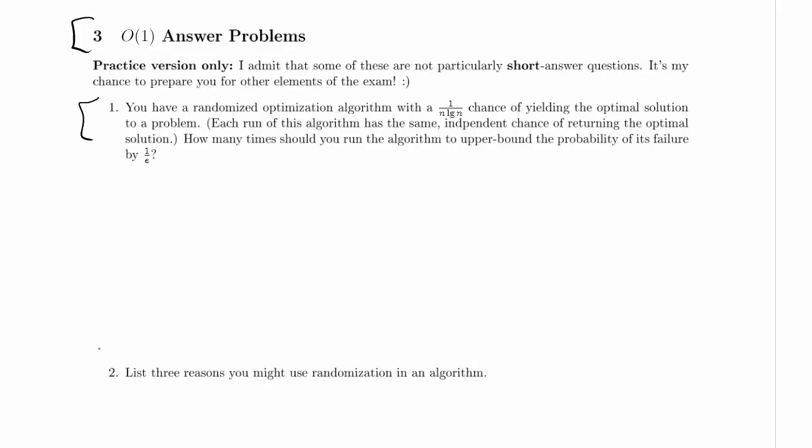Let's work through both parts 1 and 2 of the third problem on the practice exam. So you have a randomized optimization algorithm with a 1 in n log n chance of yielding the optimal solution to a problem. Each run of the algorithm has the same independent chance of returning the optimal solution. How many times should you run the algorithm to upper bound the probability of its failure by 1 over e?